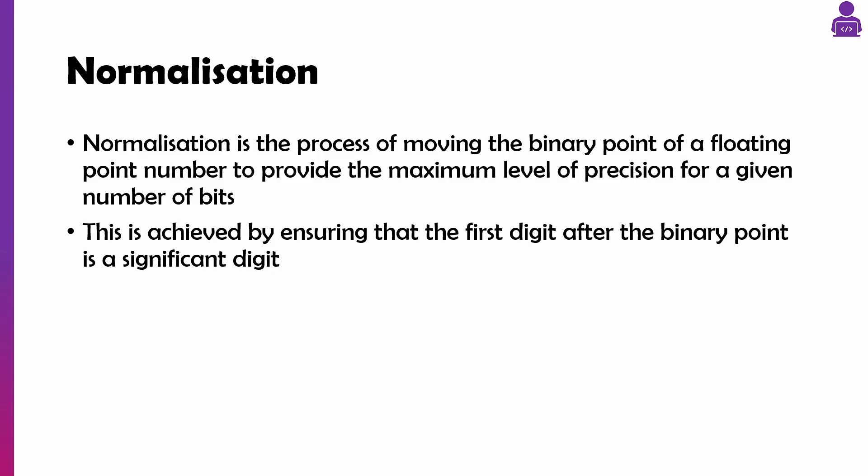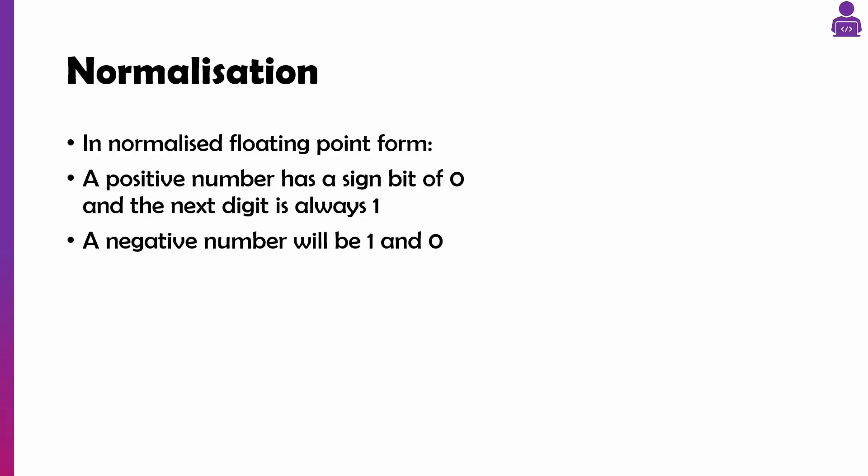This is achieved by making sure that the first digit after the binary point actually does something. A zero isn't actually doing anything, it's just saying it's not this number. In a normalized floating point number, a positive number will have a sign bit of zero,